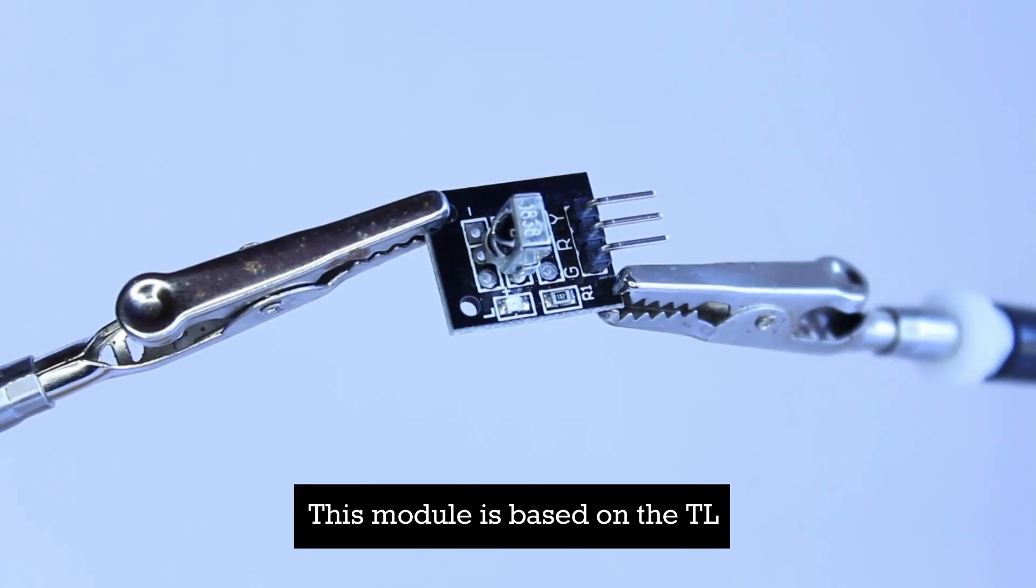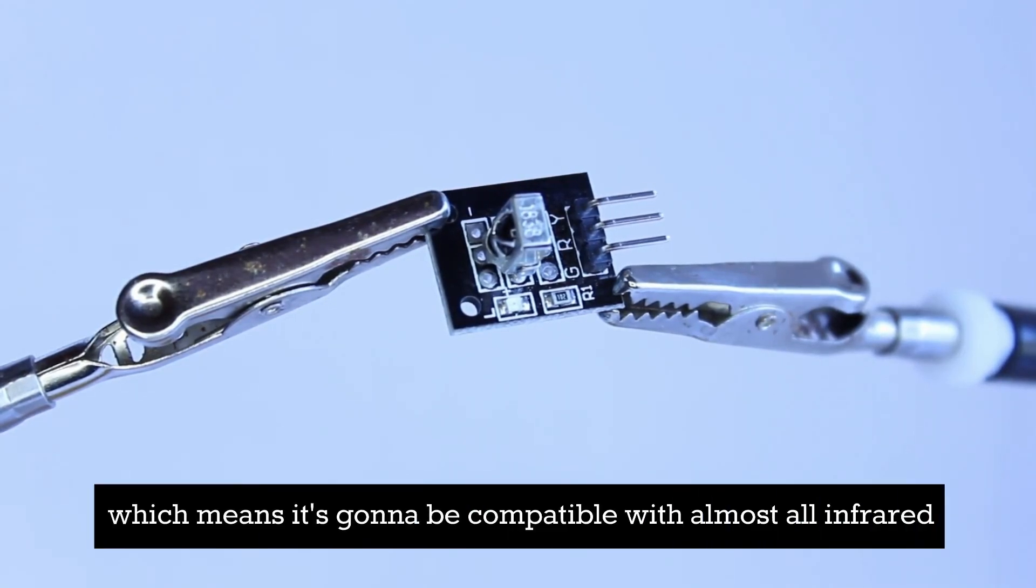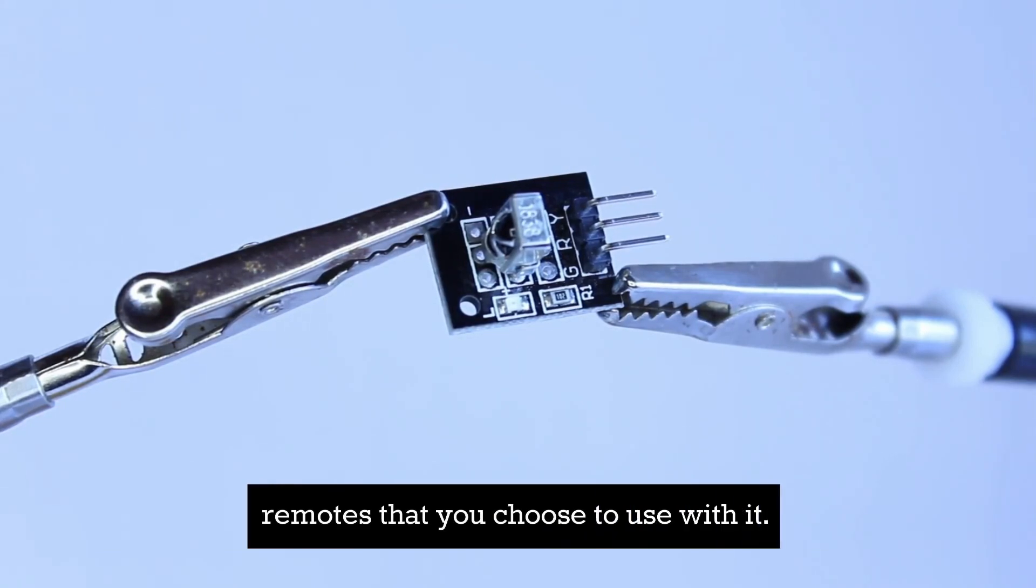This module is based on the TL1838 infrared receiver. It operates at 37.9 kilohertz, which means it's going to be compatible with almost all infrared remotes that you choose to use with it.